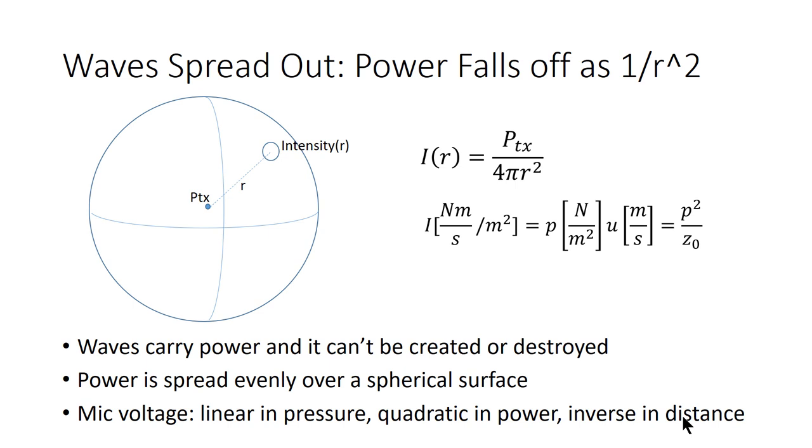Intensity has units of watts, or newton meters per second, per meter squared. Pressure has units of newtons per meter squared, and flow rate has units of meters per second. So we can see if we just multiply the pressure and the flow rate units together, we get the intensity units.